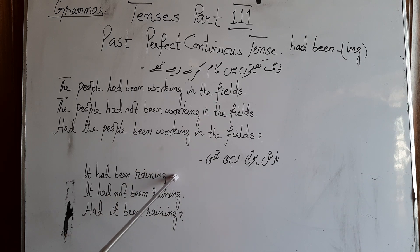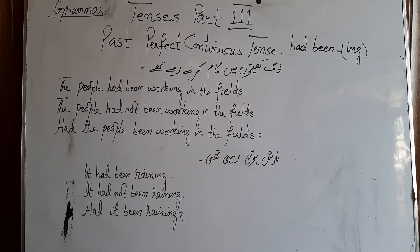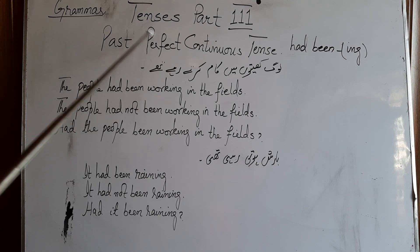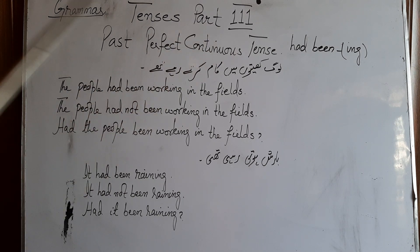کئی دنوں سے بارش ہوتی رہی تھی، ہم کئی دنوں سے اسکول جاتے رہے تھے — such type of sentences in which the work had started earlier, it was still going on in the past, is called past perfect continuous tense.